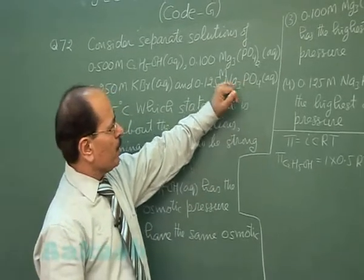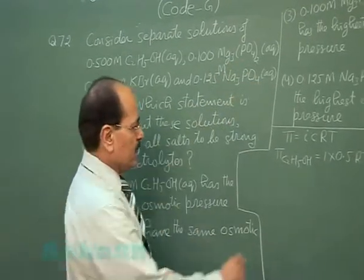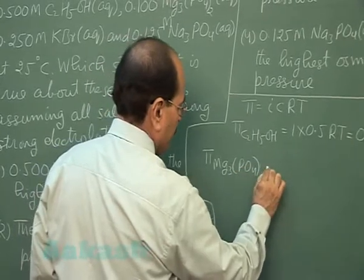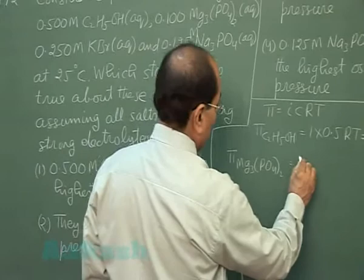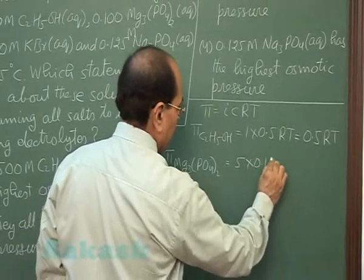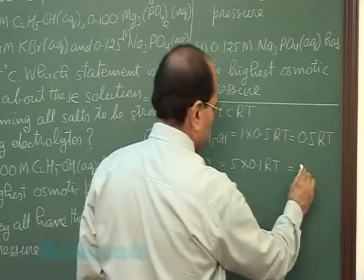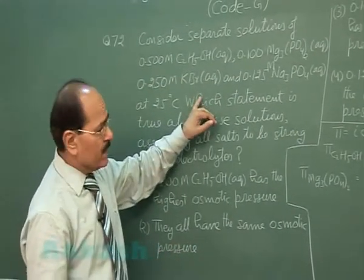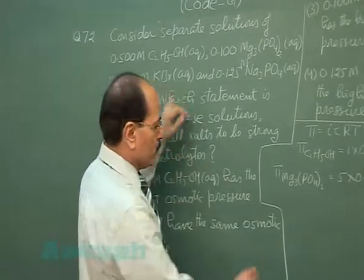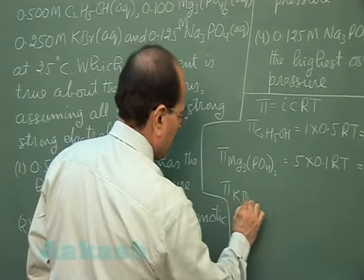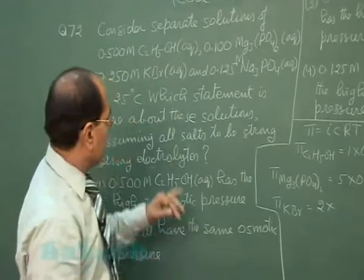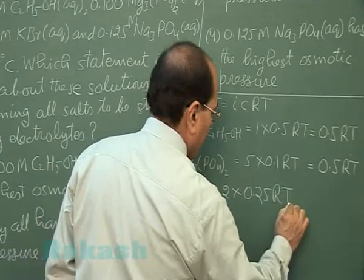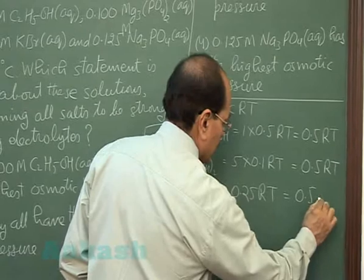For the magnesium phosphate solution, the van't Hoff factor i will be 5, and concentration is 0.1, so osmotic pressure = 5 × 0.1 × RT = 0.5RT. For the potassium bromide solution, the van't Hoff factor is 2 and concentration is 0.25, so osmotic pressure = 2 × 0.25 × RT = 0.5RT.